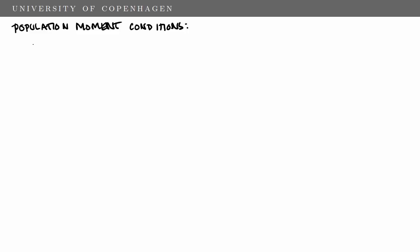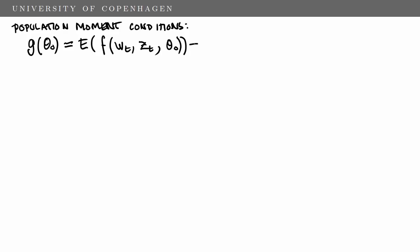Using general notation, we can define the population moment condition G of the true parameters theta zero as an unconditional expectation of some function F that depends on the model variables Wt, a set of instruments Zt, and the k by 1 vector of true parameters theta zero. That unconditional expectation is equal to zero.